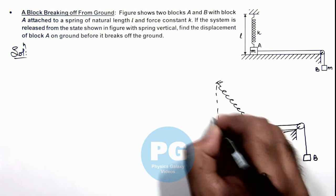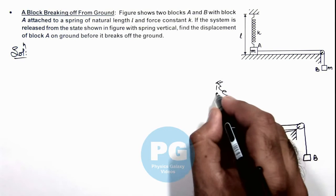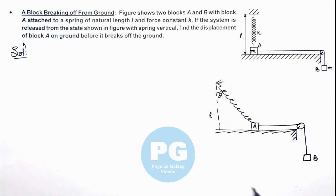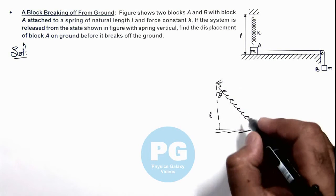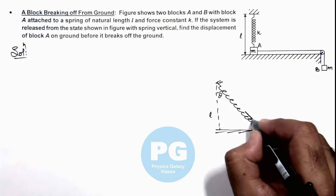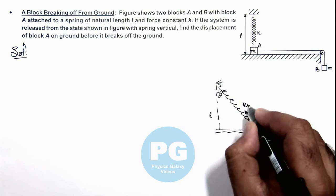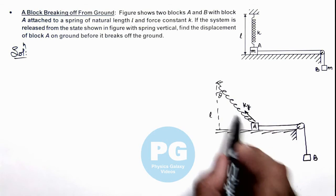This length is l, and say if this angle is theta to which spring is inclined due to elongation of spring. This will apply a force k y on block A, if y is the elongation in spring.